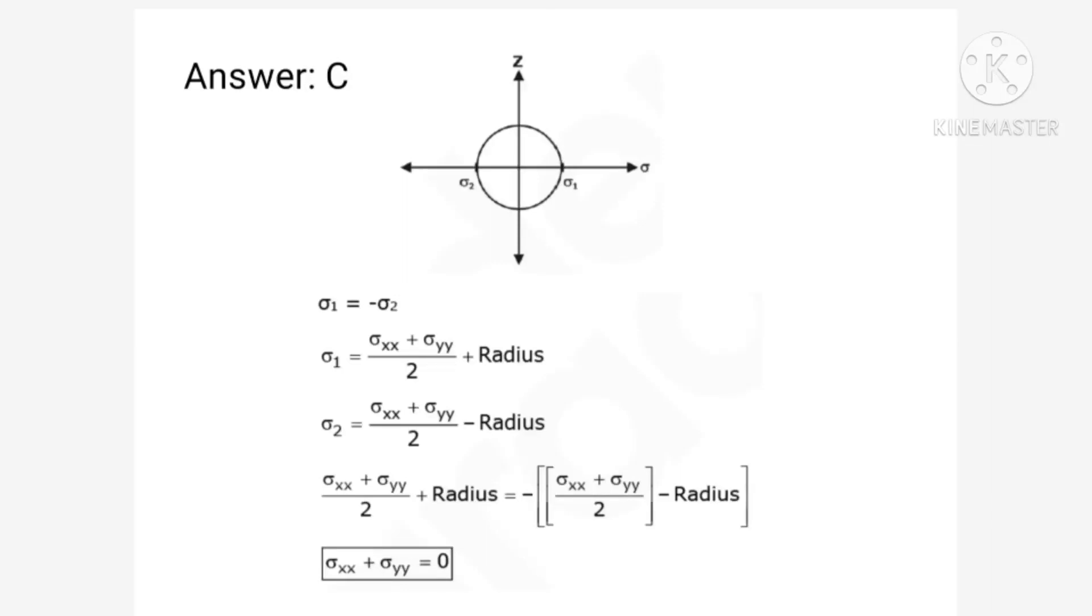Equation for principal stress is sigma 1 equal to sigma xx plus sigma yy whole divided by 2 plus radius, and sigma 2 same equation with radius term as minus. So we can equate these two with opposite signs, and hence if you simplify this you will get sigma xx plus sigma yy equal to 0. So option C is correct.